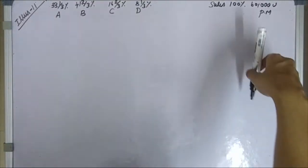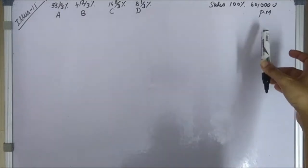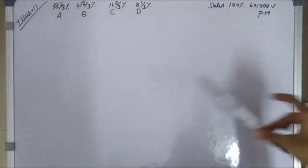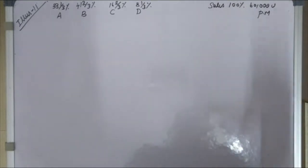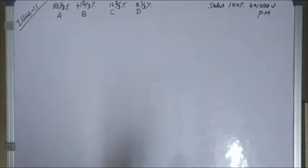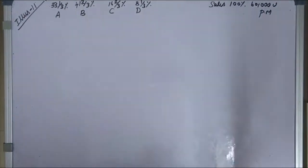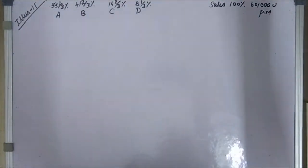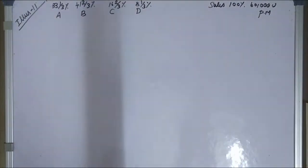Variable cost as a percentage of selling price: product A is 60%, product B is 68%, product C is 80%, product D is 40%. Fixed cost is 14,700 per month. We have to calculate the PV ratio and break-even point. The formula is: fixed cost divided by PVR.